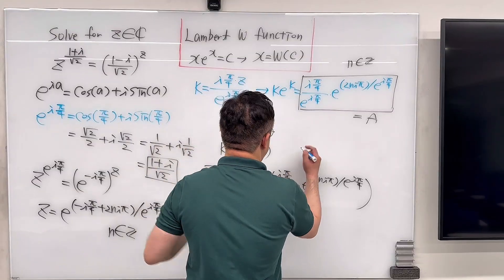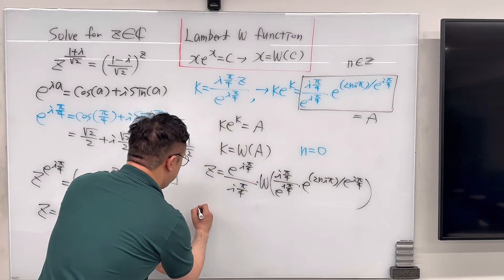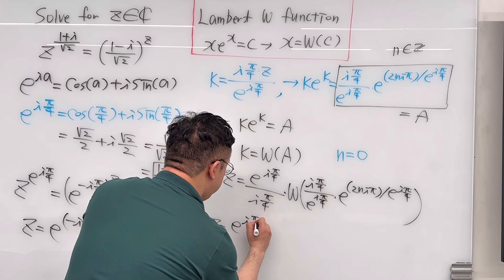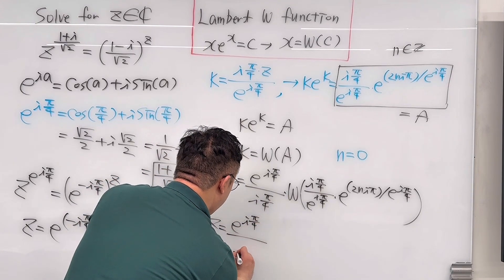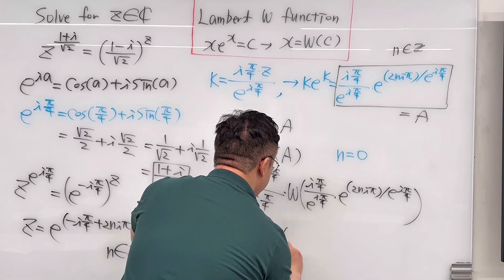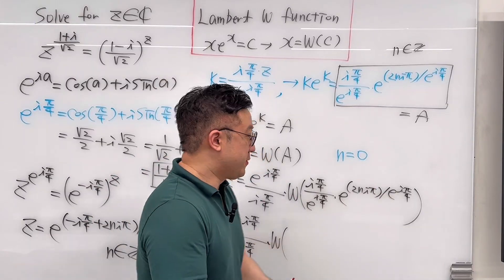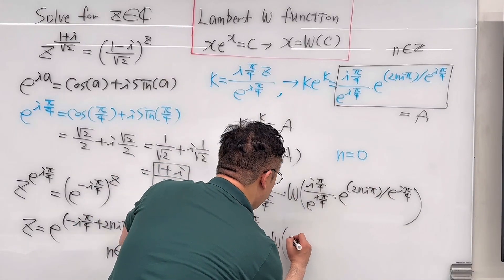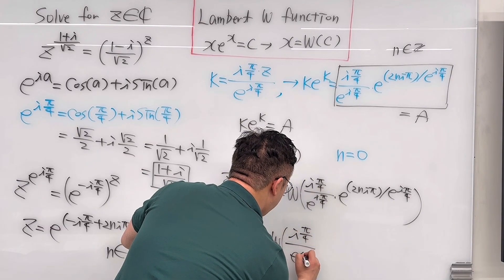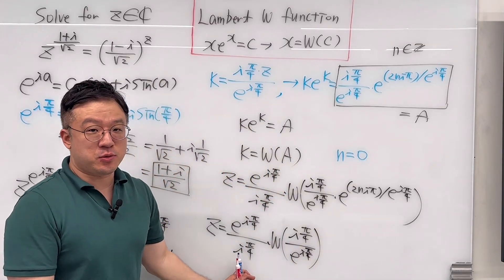It only makes sense when n equals 0. So the value of z we are looking for is e^(i·pi/4) over i·pi/4, times Lambert W of i·pi/4 over e^(i·pi/4), since e to the power of 0 equals 1. This is the answer to this question.